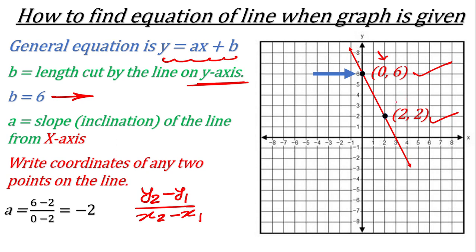I have written the coordinates as (x1, y1) and (x2, y2). Just remember: if you take x2 as 0, then compulsorily y2 must also be from the same point. You can write it as (y1 − y2) / (x1 − x2) — that is fine — but don't mix up the x and y values between the two points. If you have taken 2 as x2, then y2 must be taken as 2.